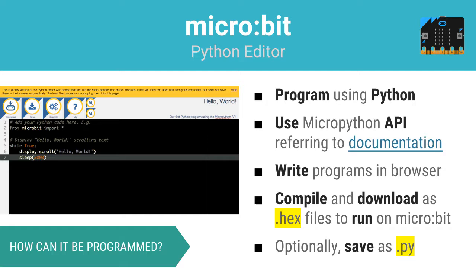Just as with the JavaScript blocks editor, completed programs can be compiled and downloaded as the special .hex files that the MicroBit needs. Simply dragging and dropping the .hex file to the MicroBit allows you to test. In addition to generating compiled .hex files, this editor also allows you to download your source as .py files, the format normally associated with Python programs.